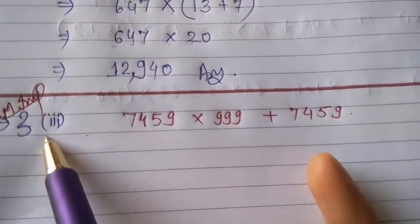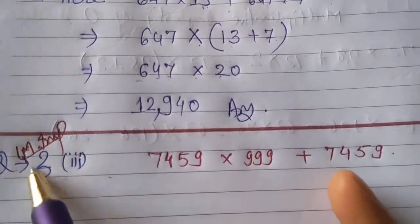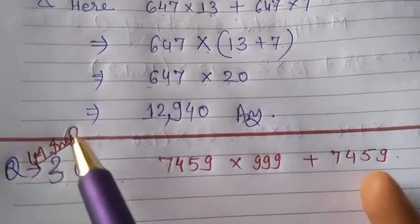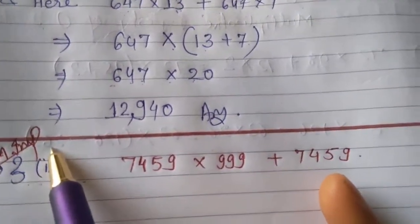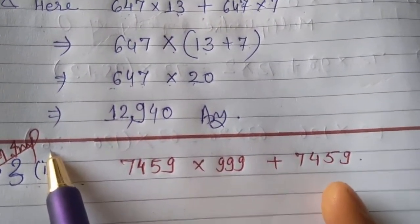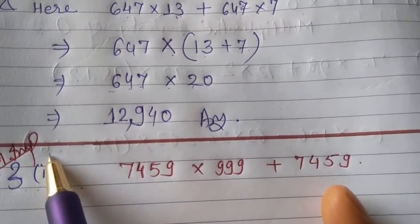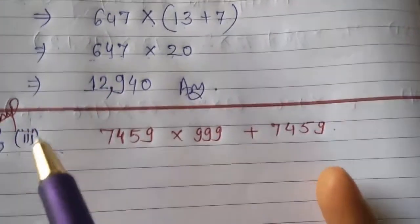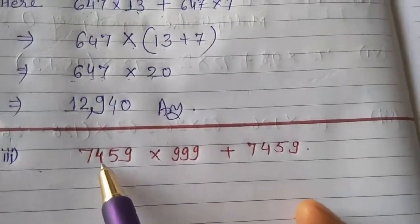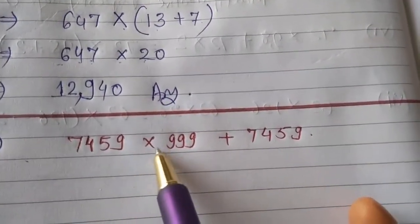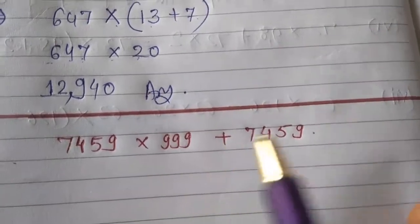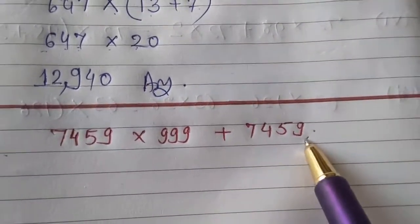Part 3 is the most important question — I've marked it most IMP, so it will surely come in your question paper. The question is: 7,459 × 999 + 7,459.